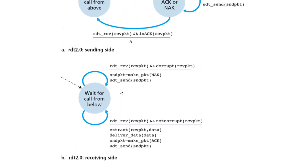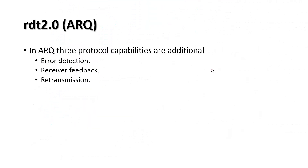On the receiving side, it is a basic implementation similar to RDT 1.0, with one new addition: bit errors are checked. If corruption is detected, it sends a NAK. If no corruption is found, it sends an ACK. This is the functionality added in RDT 2.0 on the receiver side.